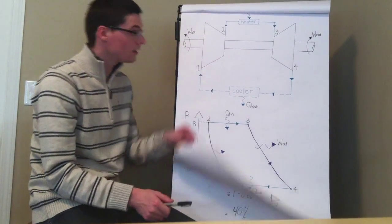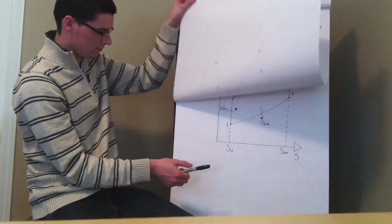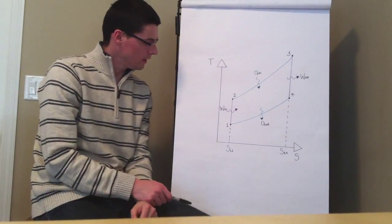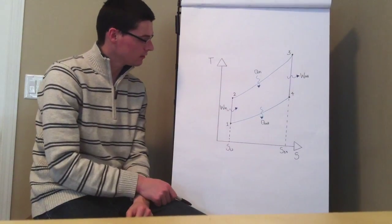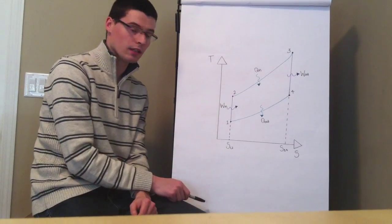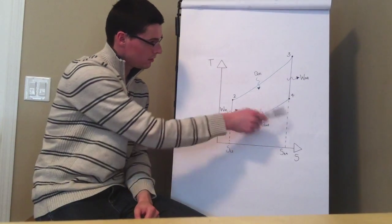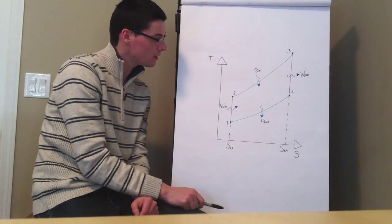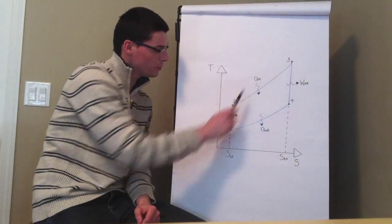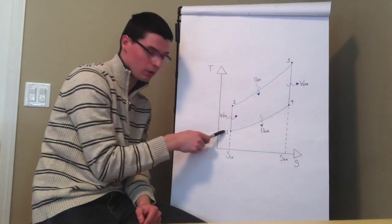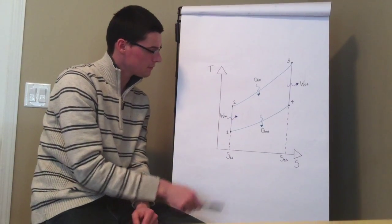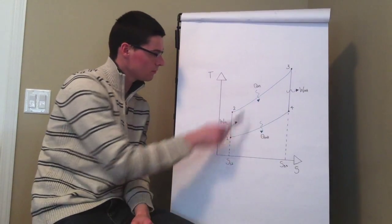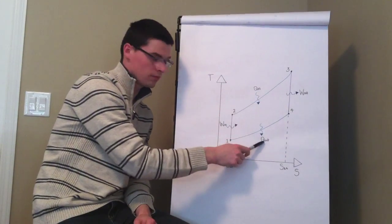So now let's just look at the TS diagram. As we can see here, from one to two is isentropic as well as from three to four is another isentropic. And then from two to three and from four to one are the isobarics. Again, we have work in and work out and then heat in and heat out.